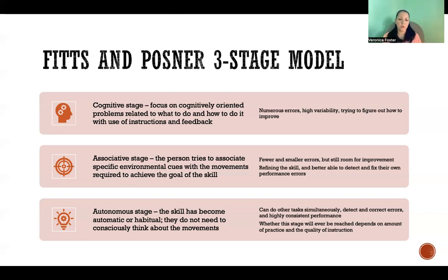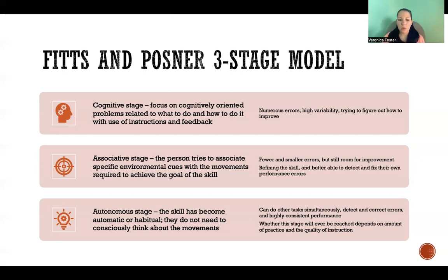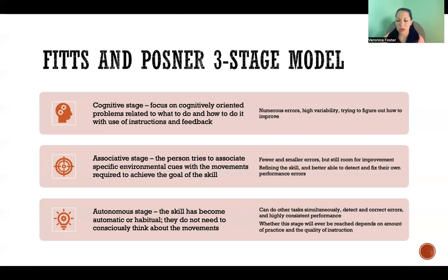The autonomous stage is where the skill has become automatic or habitual — you don't have to consciously think about the movement at all. You could do other tasks simultaneously, detect and correct errors much more easily, and there's much more consistency in performance. Not everyone will always reach the autonomous stage for any given skill. Whether someone reaches this stage depends on how much practice and the quality of instruction they receive during practice — particularly during the cognitive and associative stages, to help them identify their own errors and correct them. If someone's not receiving quality instruction, they may never reach the autonomous stage because they may not have received the feedback necessary to further refine the skill.